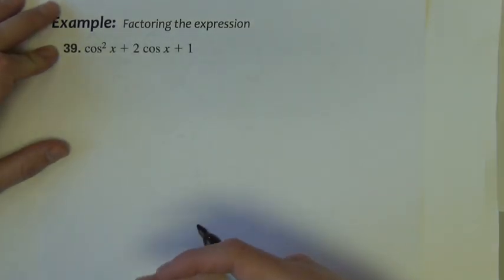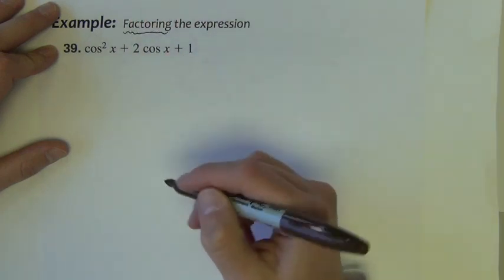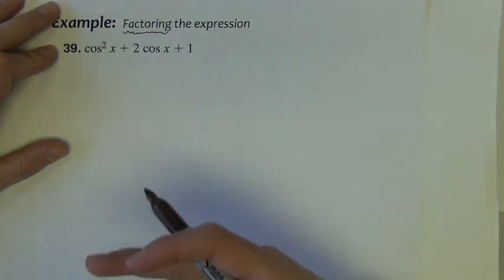Another opening strategy when proving trig identities, which is, again, that's where we're going in this first couple lessons of this chapter, these proofs, is to use some strategies that we have from algebra to simplify, to rewrite expressions, and one is factoring.